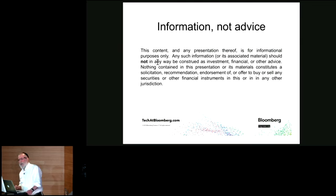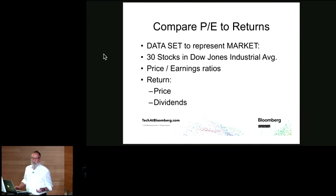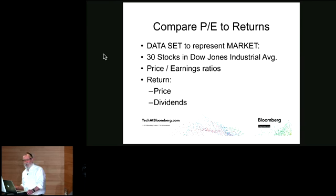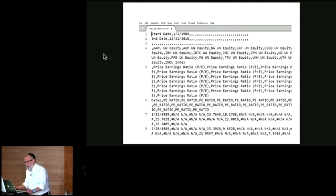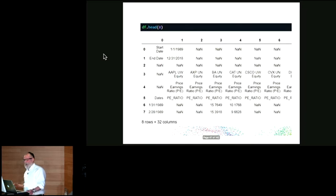Here's the fine print: this is information, not advice. To compare P/E to returns, we need a dataset. I chose to use the 30 stocks from the Dow Jones Industrial Average. I would have preferred the S&P 500 or Russell 5000, but this was my first time using Pandas, so I wanted a smaller dataset I could scroll around and explore. I got a CSV file containing price-earnings ratios. Pandas has a read_csv method I can call, pass in the file name, and it gives me back a data frame.